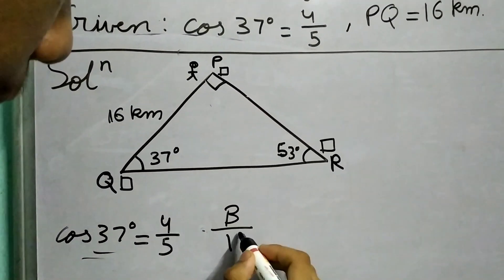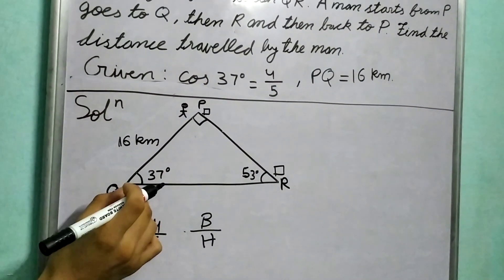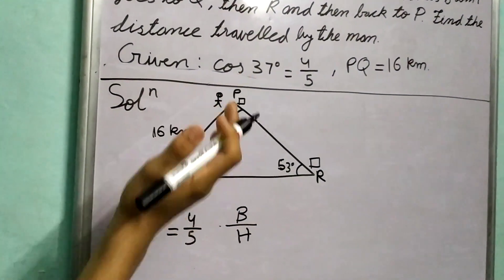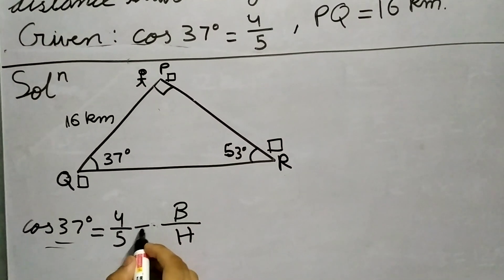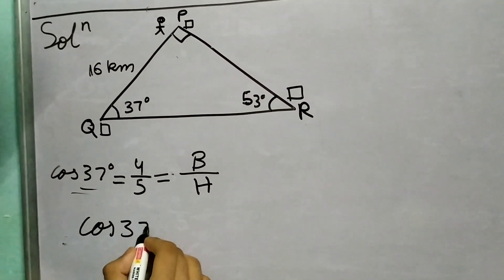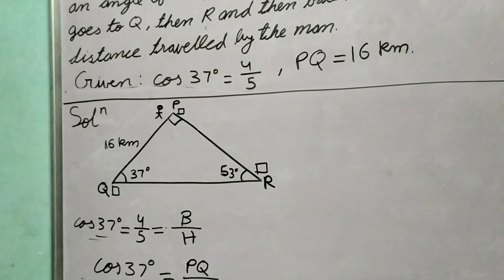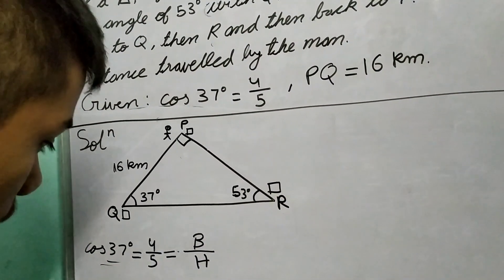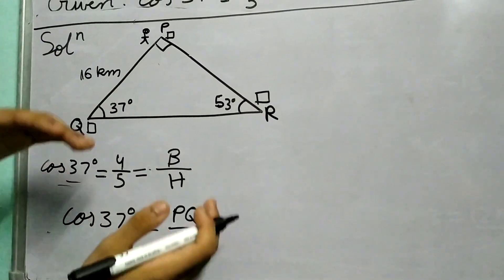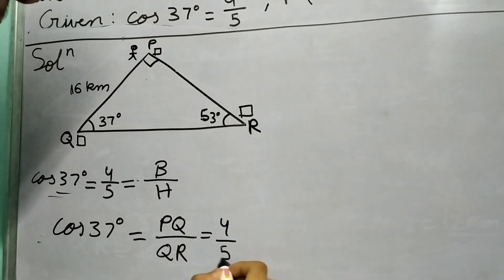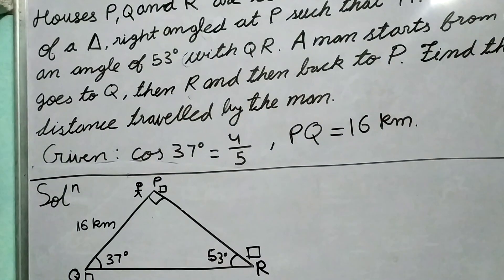We know that cosine of theta equals base upon hypotenuse. From the angle of 37°, the base is PQ. So cos 37° will equal PQ upon the hypotenuse, which is QR. The ratio of PQ to QR will be 4/5, and PQ is 16 km. Substituting, 16 km upon QR gives us 4/5.